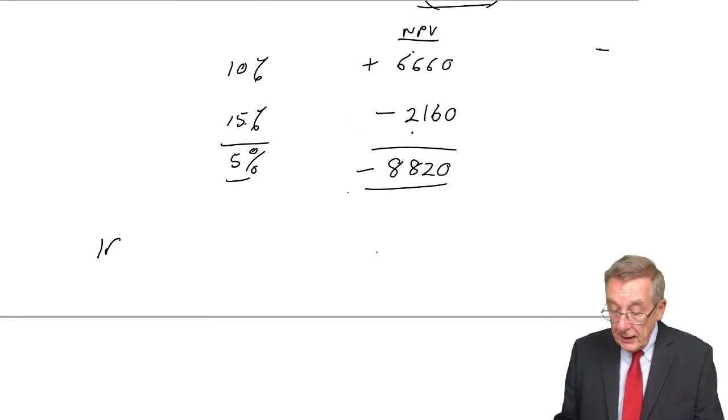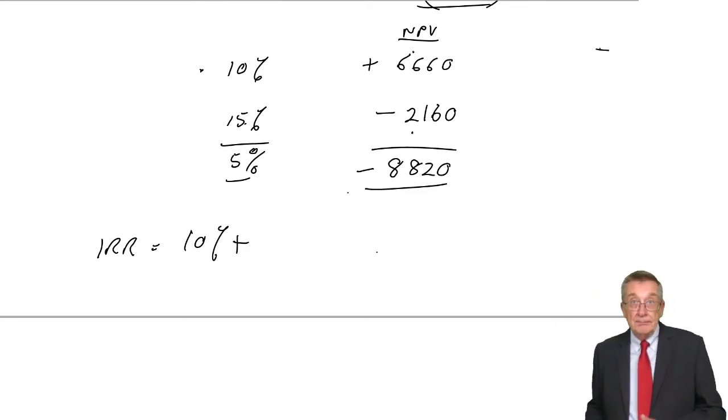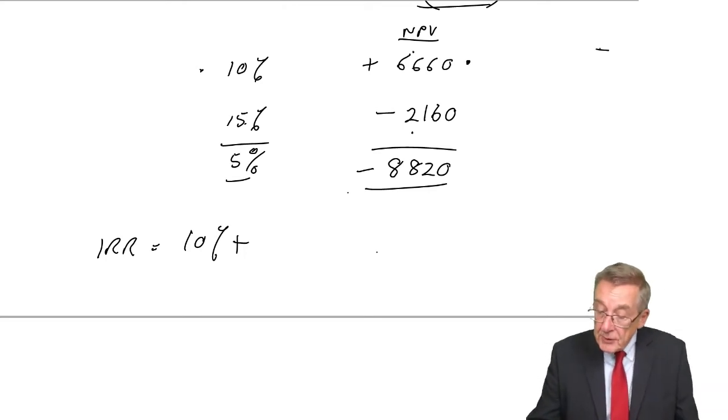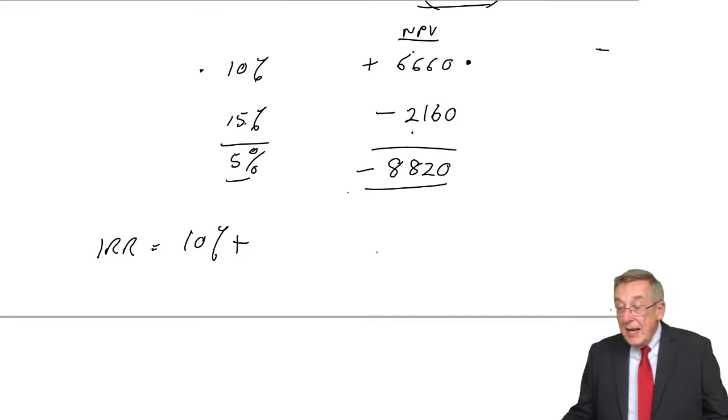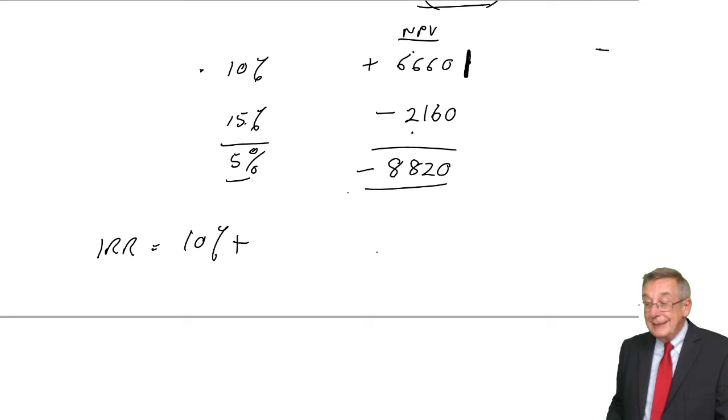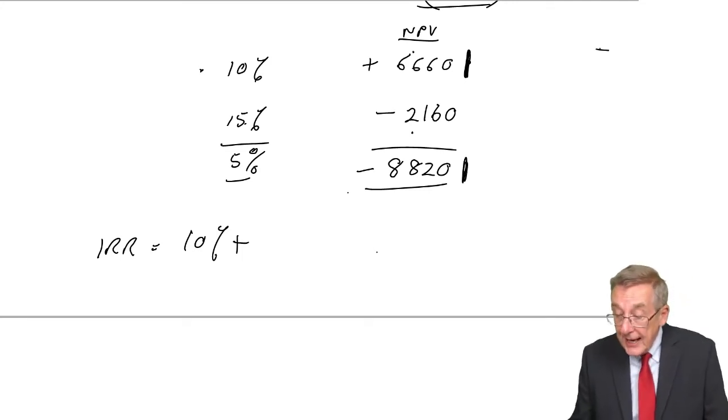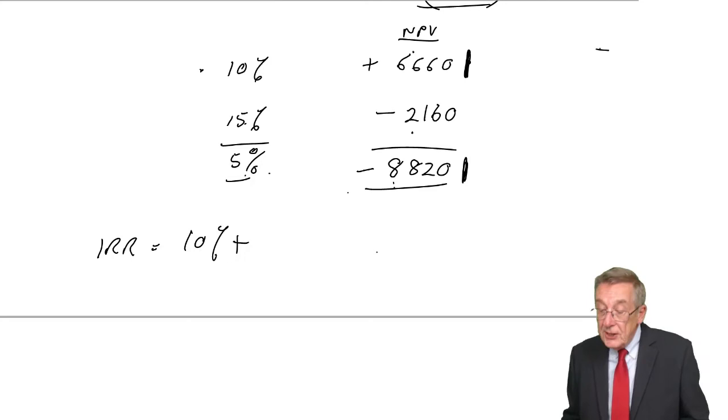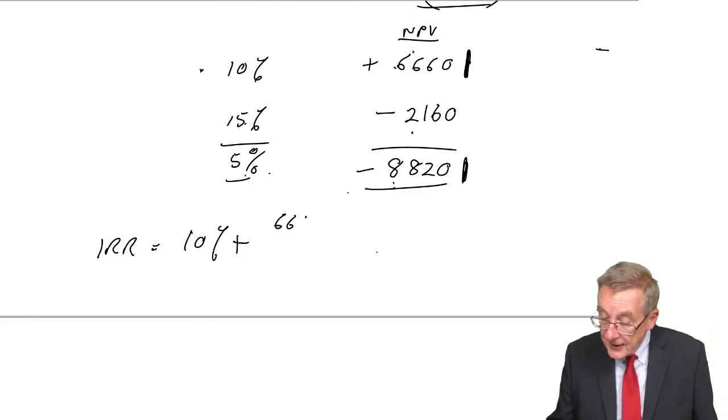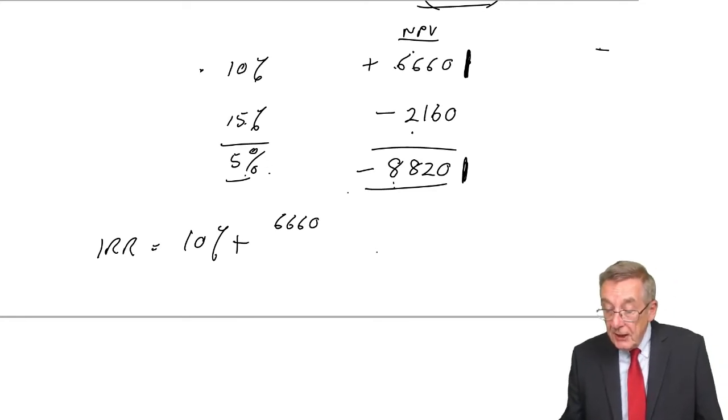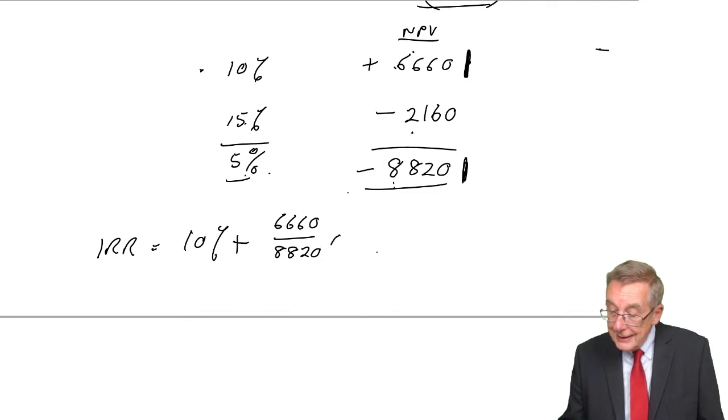The internal rate of return or IRR. We knew it was more than 10%. The question is, how much more? At 10%, it was plus 6,660. So to get to zero, I needed to fall by 6,660. But I know that a fall of 8,820 is five percentages. We apportion.